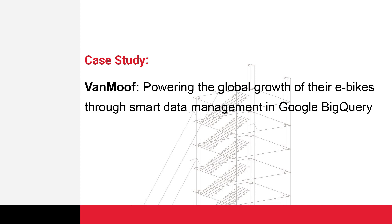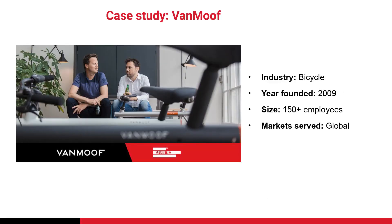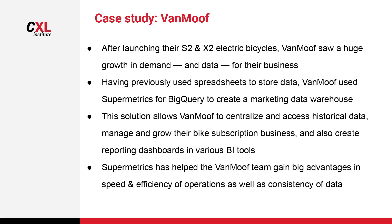Another interesting example is Vanmoo, an e-bike company powering the global growth of their e-bike business through smart data management in Google BigQuery. Vanmoo was founded in 2009 and currently has just over 150 employees serving markets globally. After launching their S2 and X2 electric bicycles, Vanmoo saw huge growth in demand and data. They previously used spreadsheets and decided to use Supermetrics for BigQuery to create a marketing data warehouse. The solution allowed Vanmoo to centralize and access their historical data, manage and grow their bike subscription business, and create reporting dashboards in various BI tools. Supermetrics also helped the Vanmoo team gain big advantages in speed, efficiency of operations, and consistency of their data.